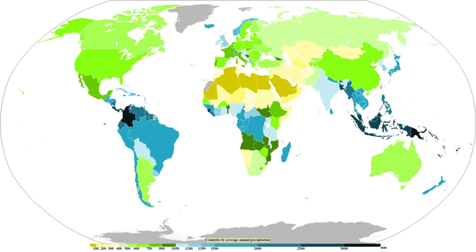A significant portion of the annual precipitation in any particular place falls on only a few days — typically about 50% during the 12 days with the most precipitation.